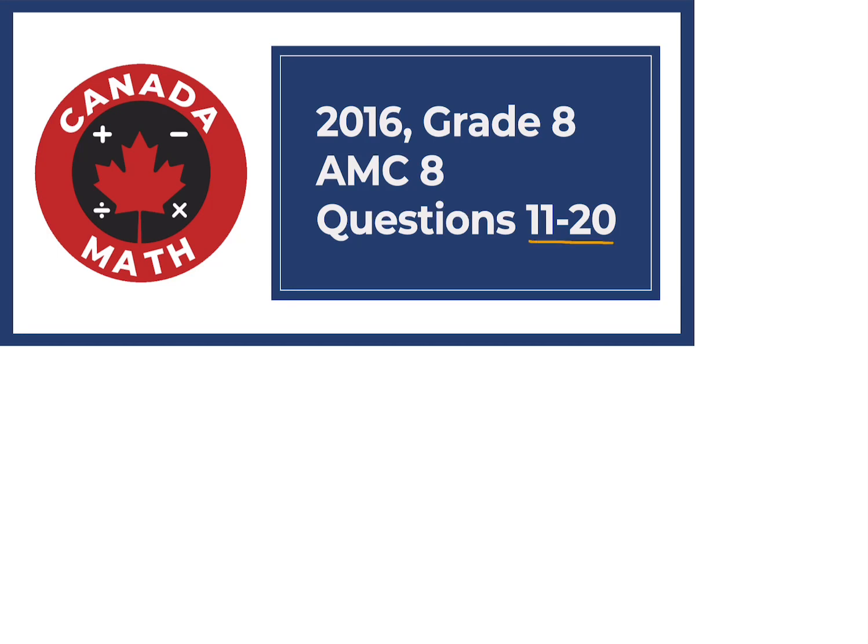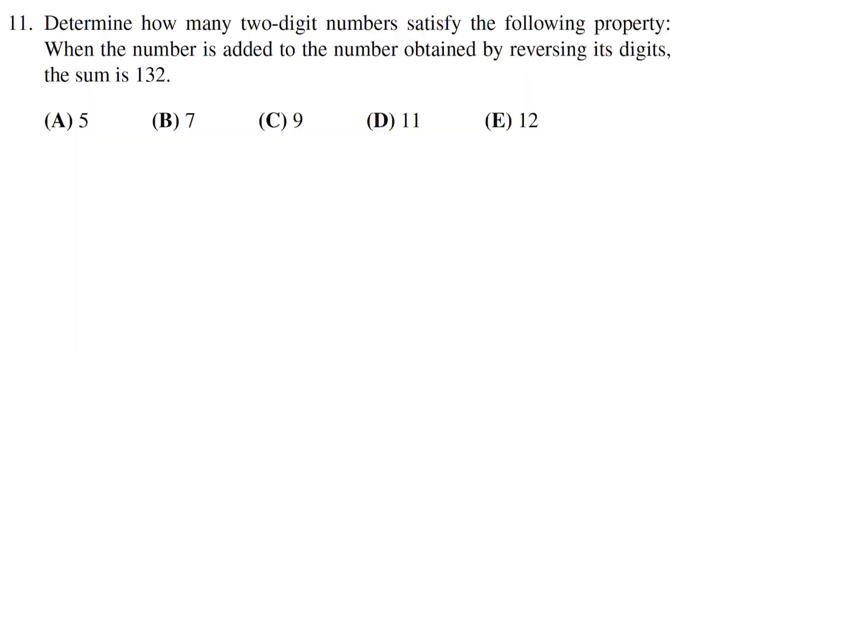Questions 11 through 20 on the 2016 grade 8 AMC 8. Determine how many two-digit numbers satisfy the following property: when the number is added to the number obtained by reversing its digits, the sum is 132.